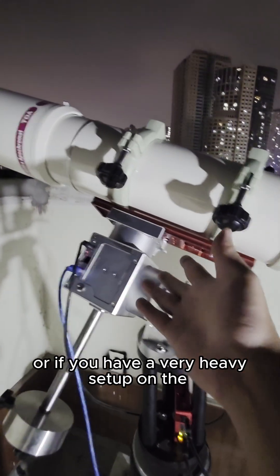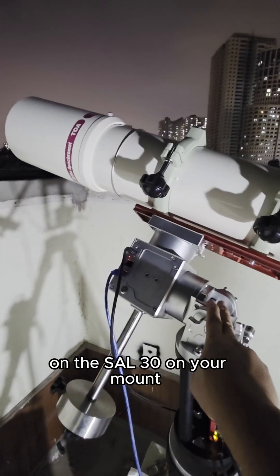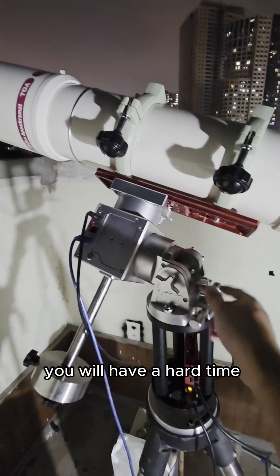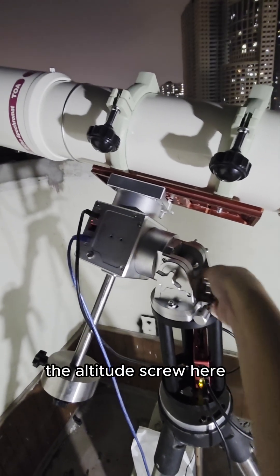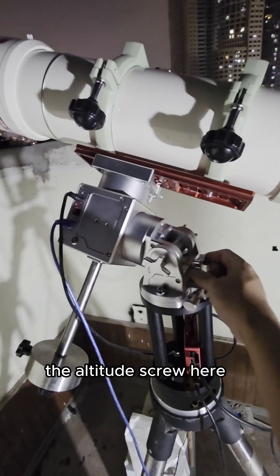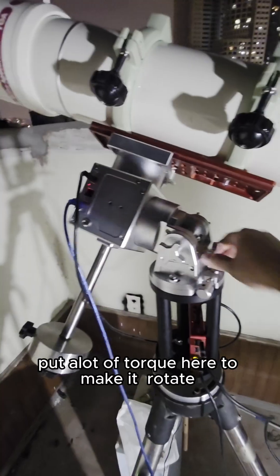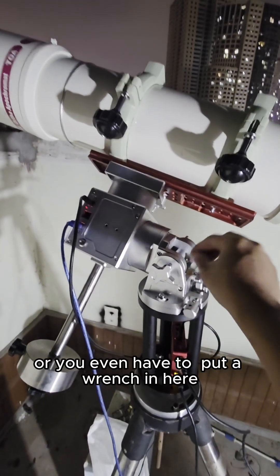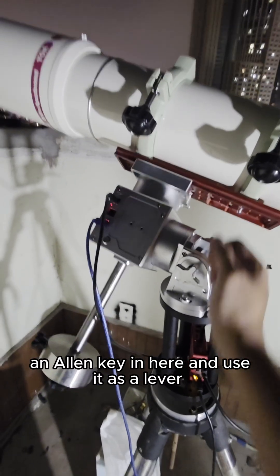Or if you have a very heavy setup on the mount, you will have a hard time adjusting this thumb screw, the outside screw here. You have to put a lot of torque here to make it rotate or you even have to put a wrench in here, an Allen key in here and use it as a lever.